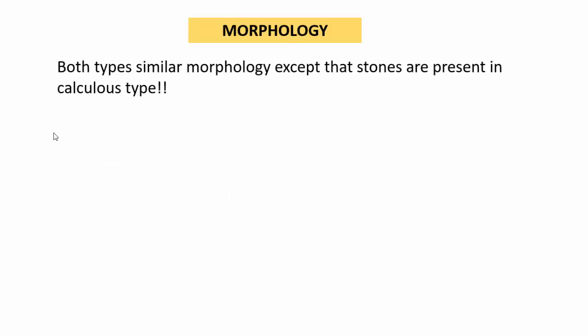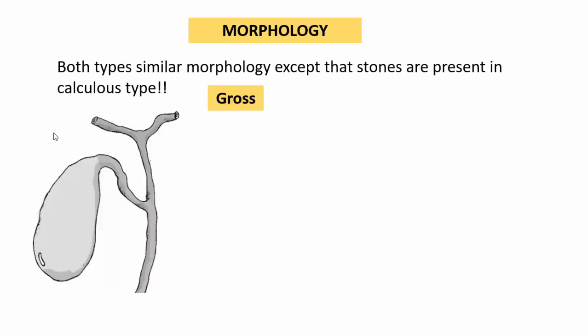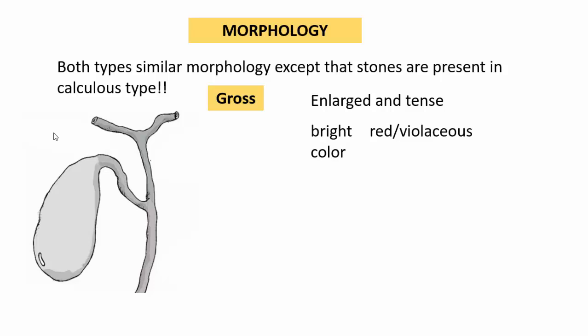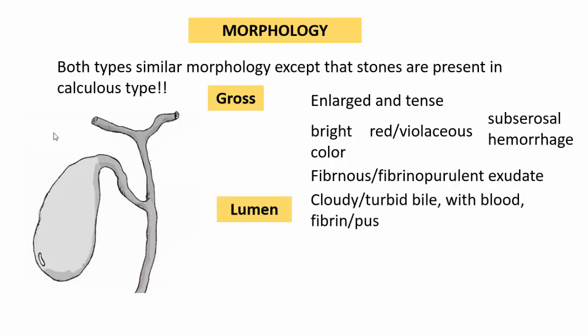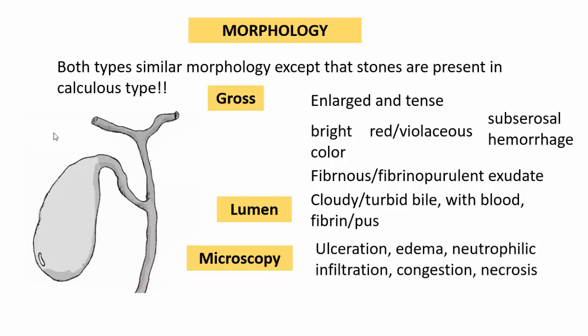Both calculus and acalculus acute cholecystitis have similar appearances, except stones are present in the calculus type. On gross examination, the affected gallbladder is usually enlarged and tense, sometimes bright red or violaceous due to subserosal hemorrhages. Fibrinous or fibrinopurulent exudate may be present in later stages. The lumen may contain cloudy or turbid bile with or without blood, fibrin, or pus. On microscopy, acute inflammatory changes include ulceration, edema of the wall, dense neutrophilic infiltration, congestion, necrosis, and in severe cases, gangrenous changes.